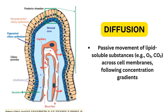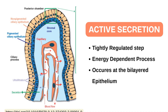Post ultrafiltration and diffusion, we now have an ultrafiltrate — basically aqueous in raw form — sitting in the stroma of the ciliary process. After this, the third and most important mechanism starts, and that is the active secretion.